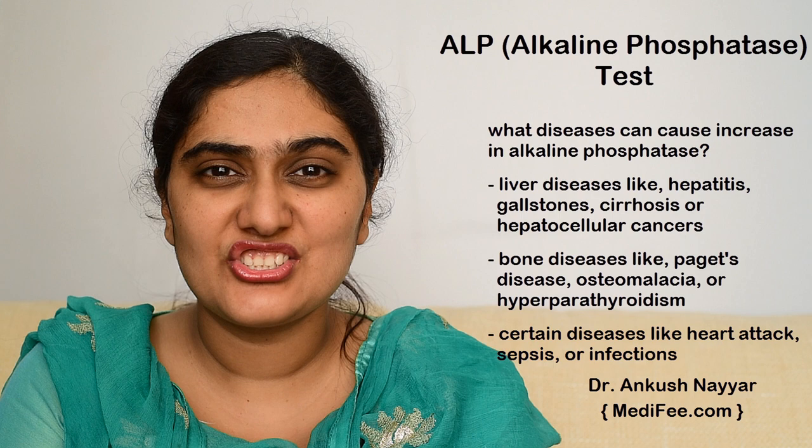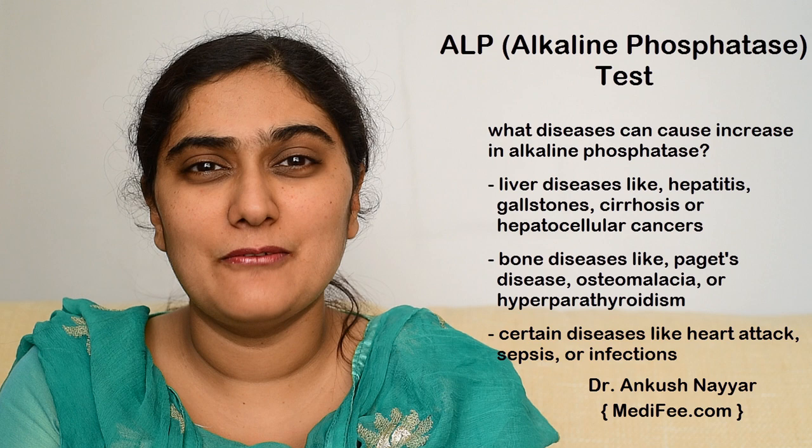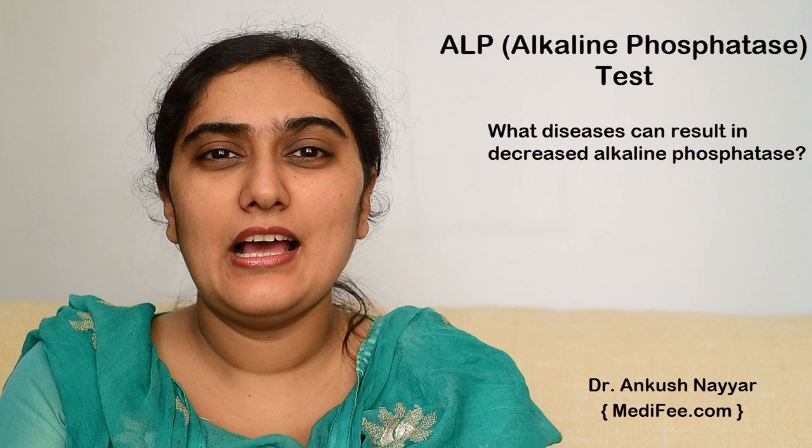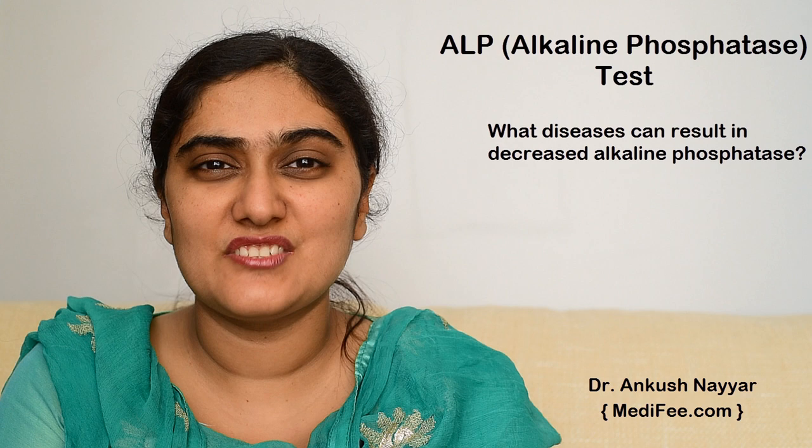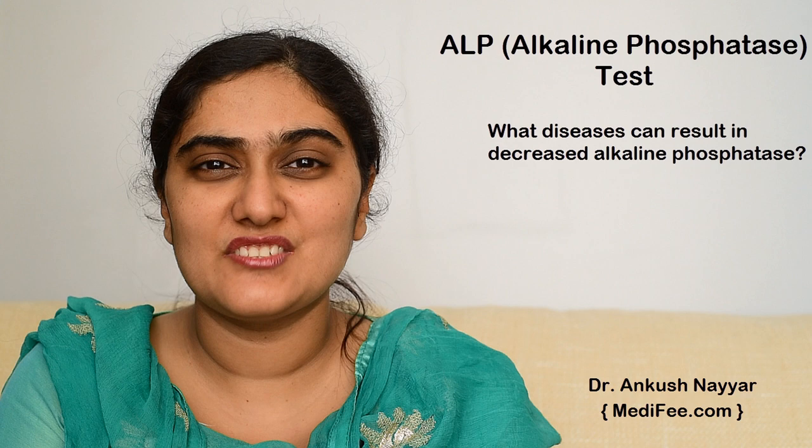Certain conditions like heart attack, sepsis, or infections like infectious mononucleosis can also result in raised alkaline phosphatase levels. Decreased levels of alkaline phosphatase are seen in patients with malnutrition, intestinal diseases like celiac disease, or deficiencies like scurvy.